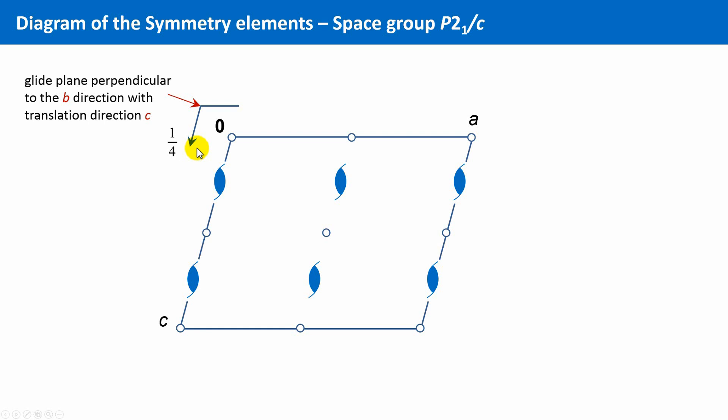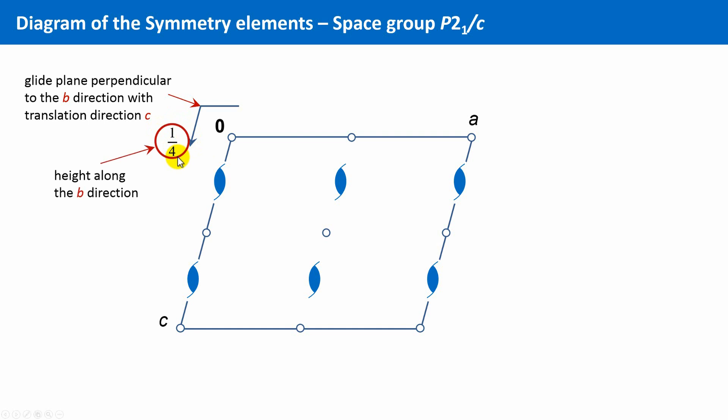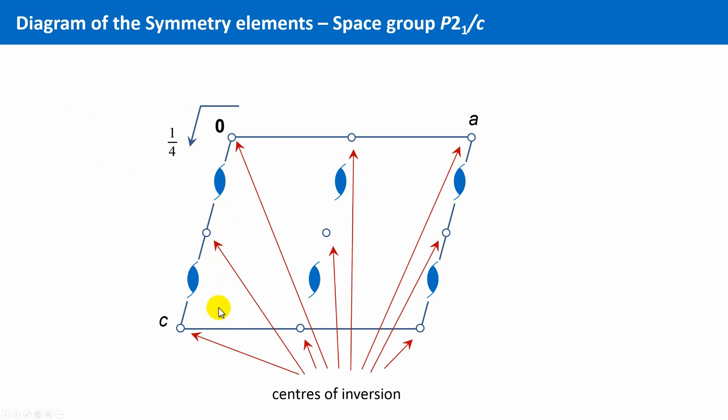Additionally, this glide plane has, of course, a specific position within the unit cell. It lies not at an arbitrary position. In the space group P21 over C, it is located at the height 1 quarter along the B direction. Furthermore, we have these 2-1 screw axis, marked with these ellipses with the two hooklets. And finally, all these small circles are centers of inversion. P21 over C is a so-called centrosymmetric space group, meaning that there is a center of inversion right in the middle of the unit cell, and all other inversion centers are generated by the other symmetry elements of this group.